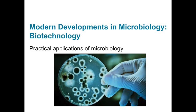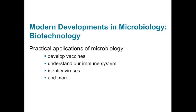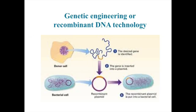Modern developments in microbiology have also shaped our relationship with microbes. Practical applications of microbiology are called biotechnology. Although biotechnology has been used in some form for centuries, techniques have become much more sophisticated in the past few decades. These research techniques are required to develop vaccines, understand our immune system, and identify viruses. Scientists working in the field of biology called genetic engineering, or recombinant DNA technology, can alter microbes to produce proteins that they normally would not make.